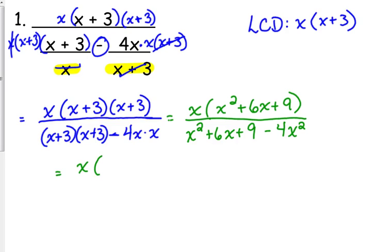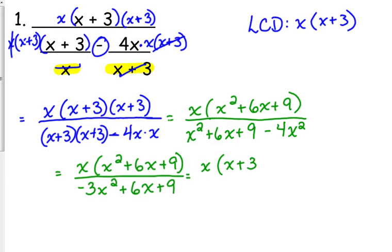I'm actually going to not multiply the top out anymore in case I'm able to factor the denominator. Minus 3x squared when I combine like terms. I'm actually going to put it back in factored form. I apologize for going back and forth there. I'm going to pull out a negative in the denominator, a negative 3.